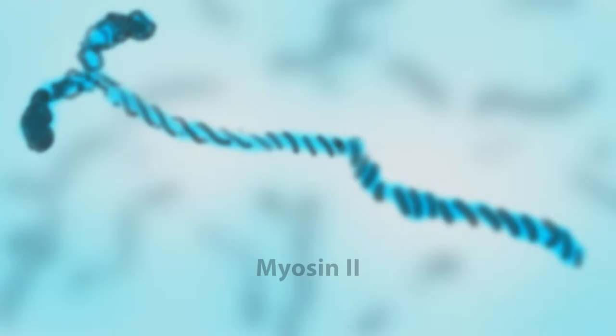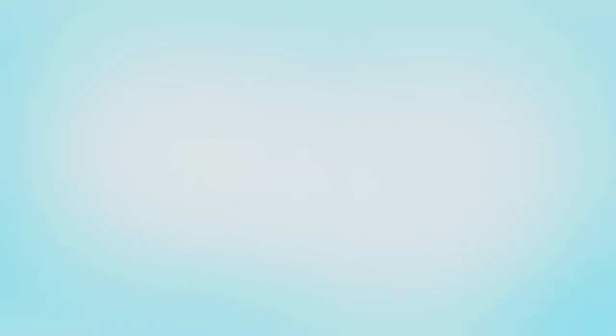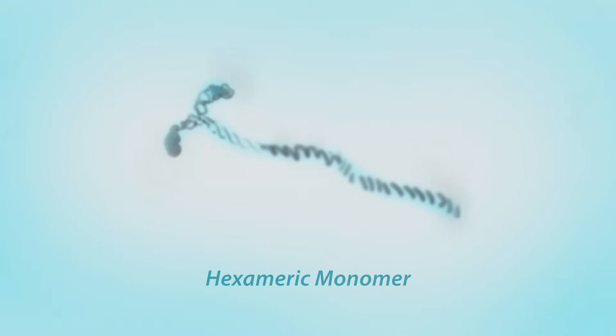Cell cytoplasm contains a reserve of soluble myosin-2 in its inactive form — a hexameric monomer, a single unit that consists of six parts: two heavy chains and two pairs of light chains. Each heavy chain includes a motor domain, a lever arm, and a long coiled-coil tail. Two light chain binding sites along the lever arm are wrapped around by the essential light chain and the regulatory light chain, important in regulating myosin activity.